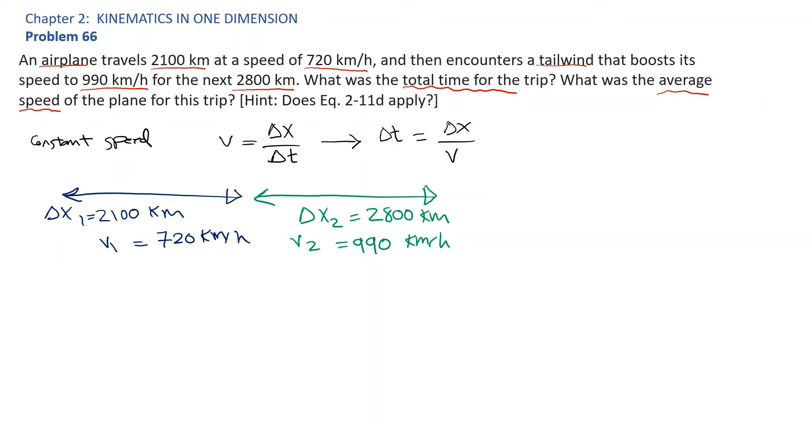To find the total time, we can find the time it takes the plane to travel the first part, delta t1, and the second part, delta t2, and we just add them.